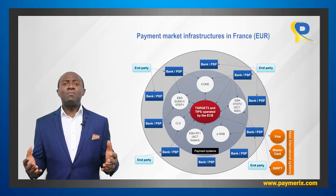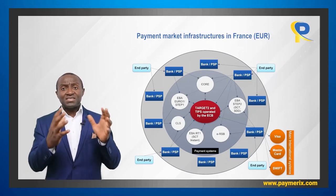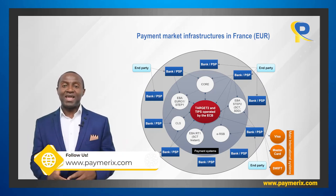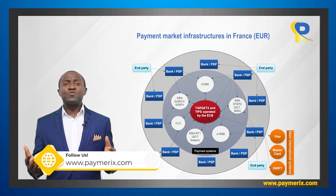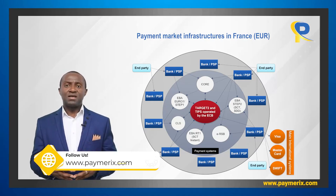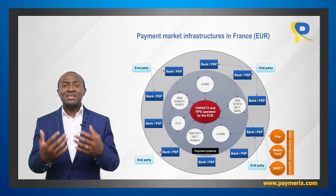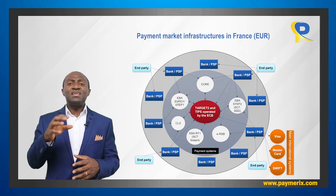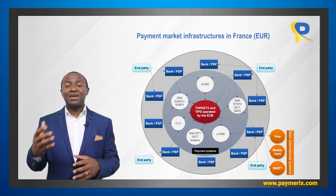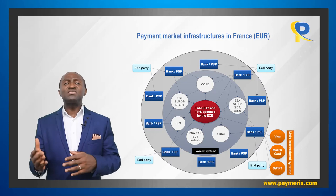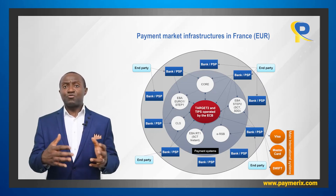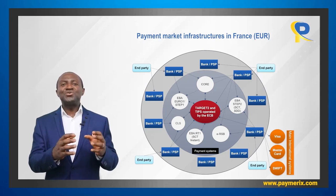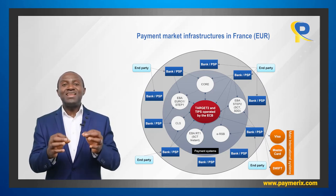Here is a similar model for France. We have central bank systems in the middle — Target 2 and TIPS — operated by the European Central Bank. Target 2 is used for large-value and urgent transfers between banks, and TIPS is used for the settlement of instant payments. Around the central bank systems, we see interbank clearing systems used for the clearing of domestic payment instruments like checks, credit transfers, and direct debits. It is the same structure, which shows that this model is really powerful.